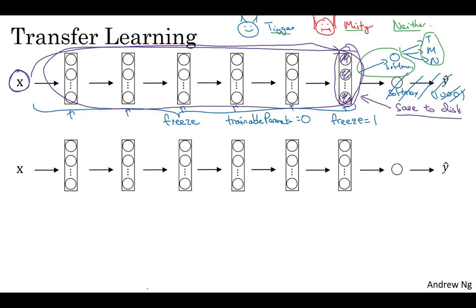What if you have a larger training set? So one rule of thumb is if you have a larger labeled dataset, maybe you just have a ton of pictures of Tigger, Misty, as well as pictures of neither of them. One thing you could do is then freeze fewer layers.